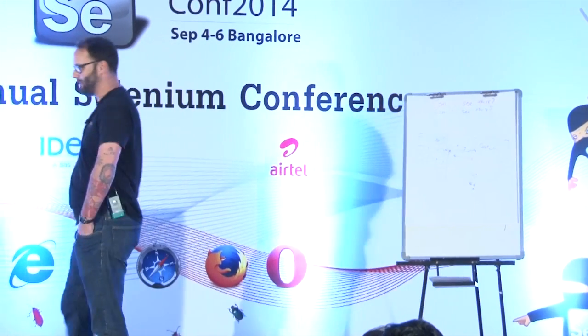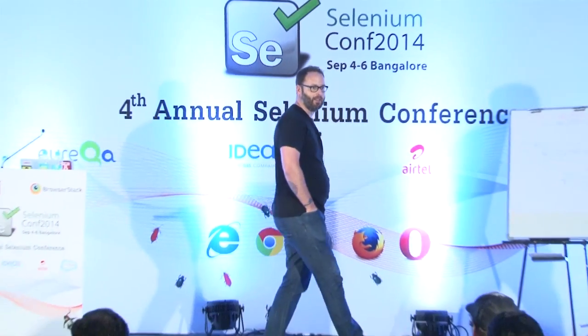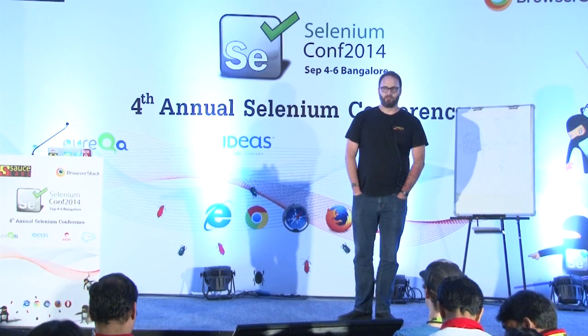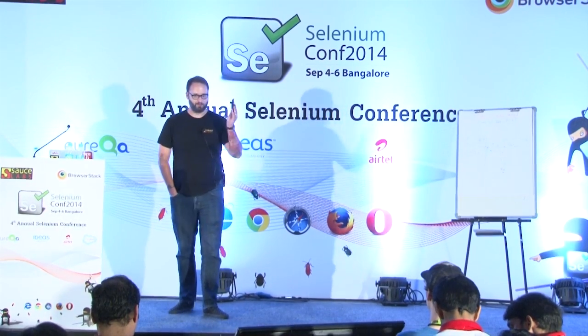Thank you all for coming this afternoon. My name is Isaac Murchie. I'm an ecosystem developer at Sauce Labs and one of the core developers on Appium, about which I'm talking today. My title is 'Selenium in the Palm of Your Hand.' I'm going to discuss what Appium is, its architecture, what it's doing under the hood when you send your test commands in, and a discussion about the trials and tribulations of making a system like Selenium, built to drive web browsers, drive a mobile phone instead.